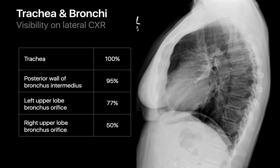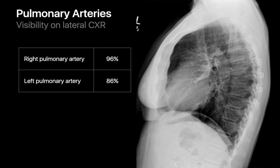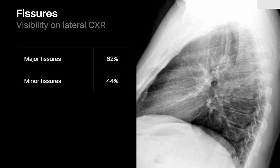The structures we've walked through may not be visible on every lateral chest radiograph you read, so it's good to know how often to expect them. The trachea and posterior wall of the bronchus intermedius are visible on practically every lateral chest radiograph. Expect to see the black circle of the left upper lobe bronchus in three-quarters of images and the right upper lobe bronchus in about half. The right and left pulmonary arteries should be distinguishable on the large majority of lateral chest radiographs, while normal fissures are seen about half the time.